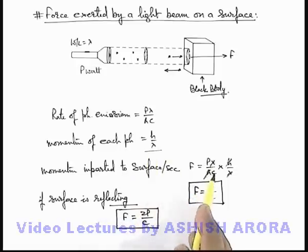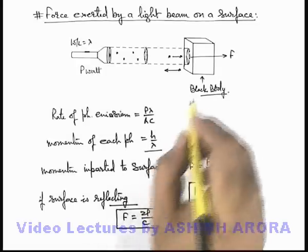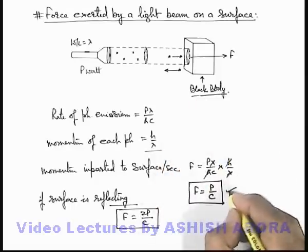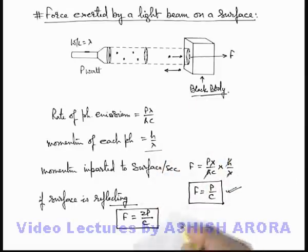Change in momentum per unit time due to each photon will be twice of h/λ, so it will be Pλ/hc multiplied by 2h/λ, that will be 2P/c. And if the surface is perfectly absorbing like a black body the force is given as P/c, and in case of reflection it is 2P/c.